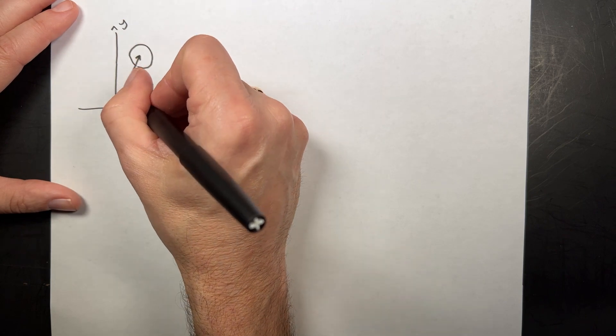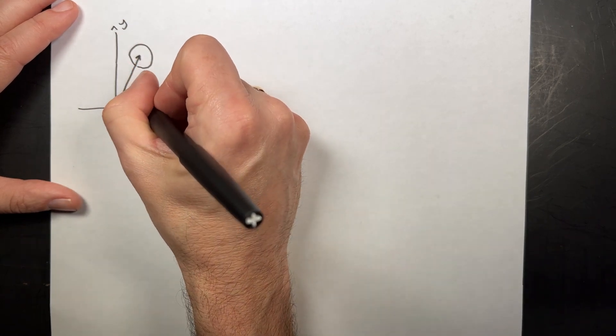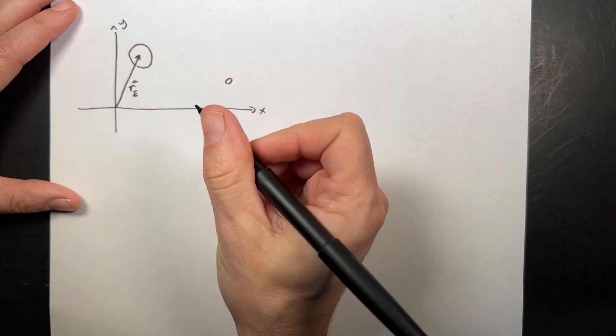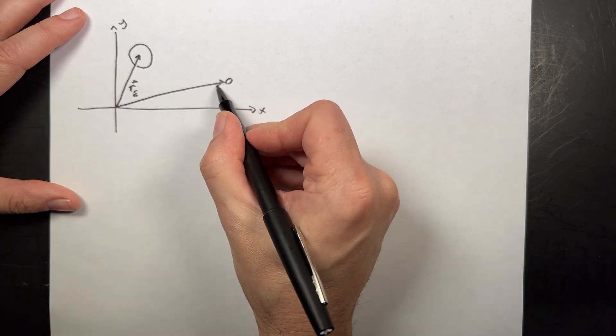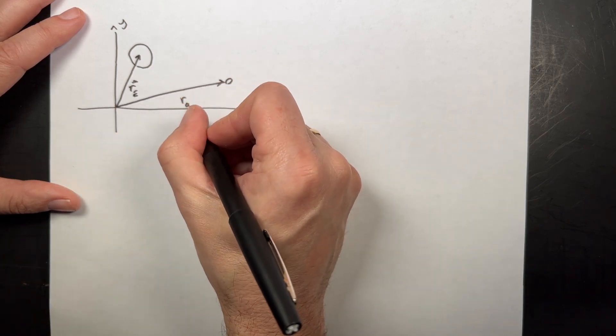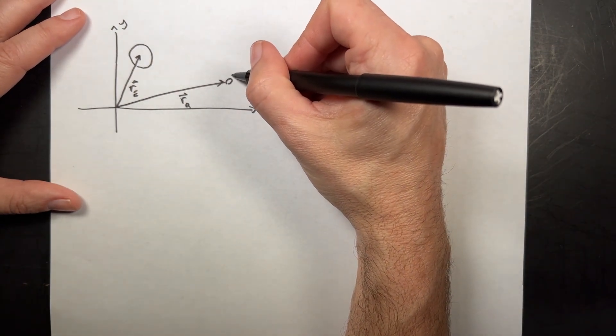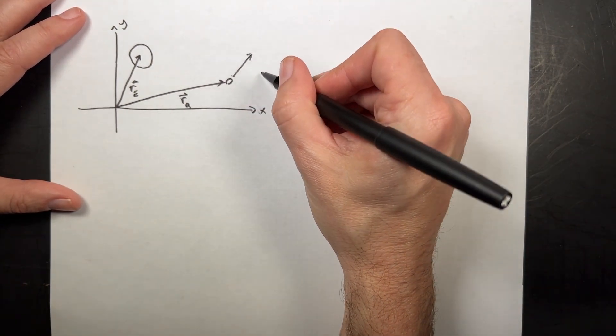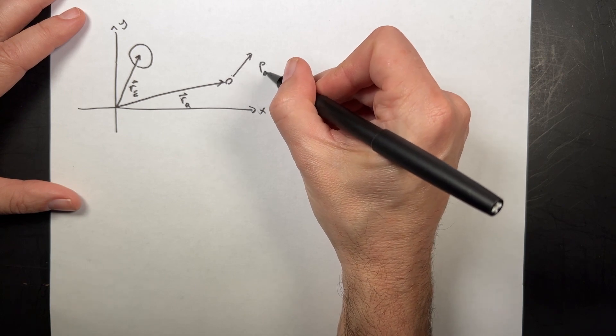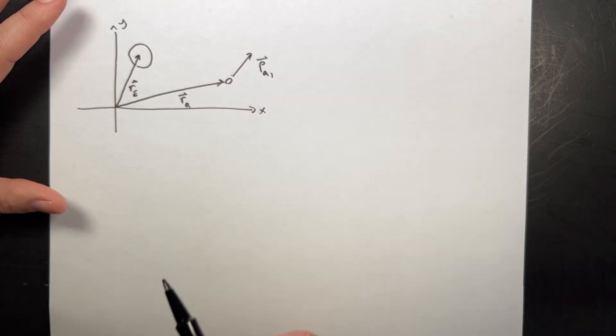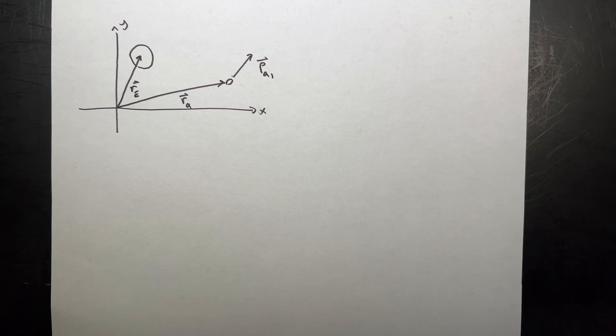So I have a vector location of the Earth. I'll call that re for Earth. And then I have a vector location of the asteroid. I'll call that ra for asteroid. And then I have a momentum of the asteroid, pa1. That's the momentum of the asteroid at time t equals zero.